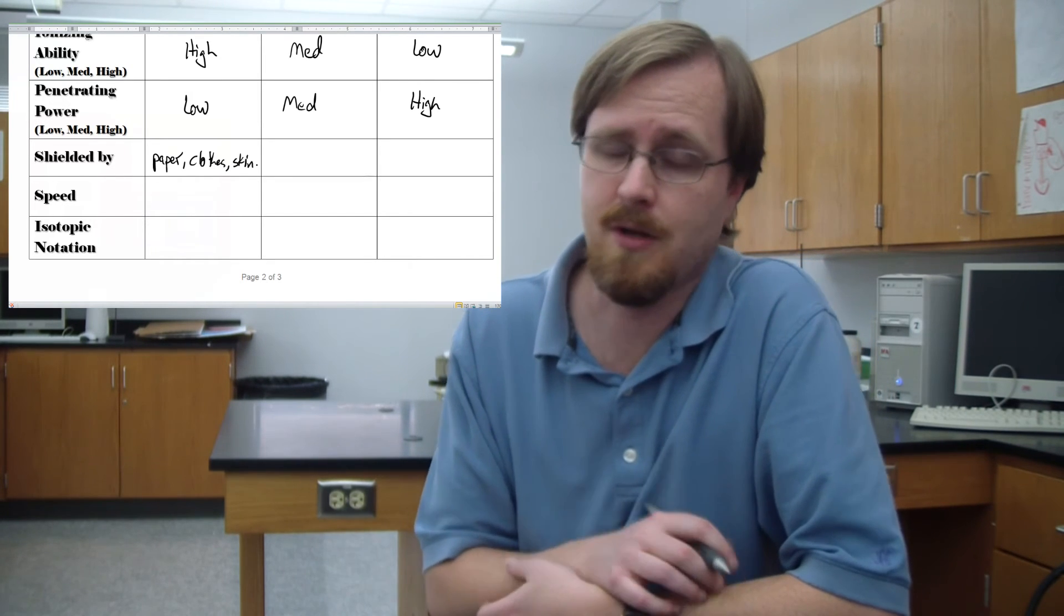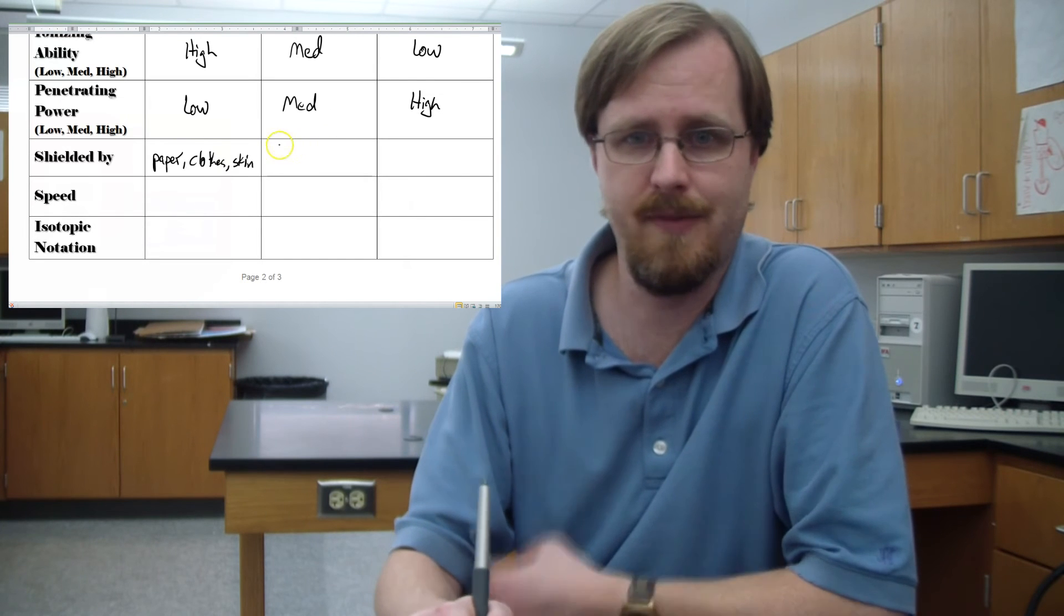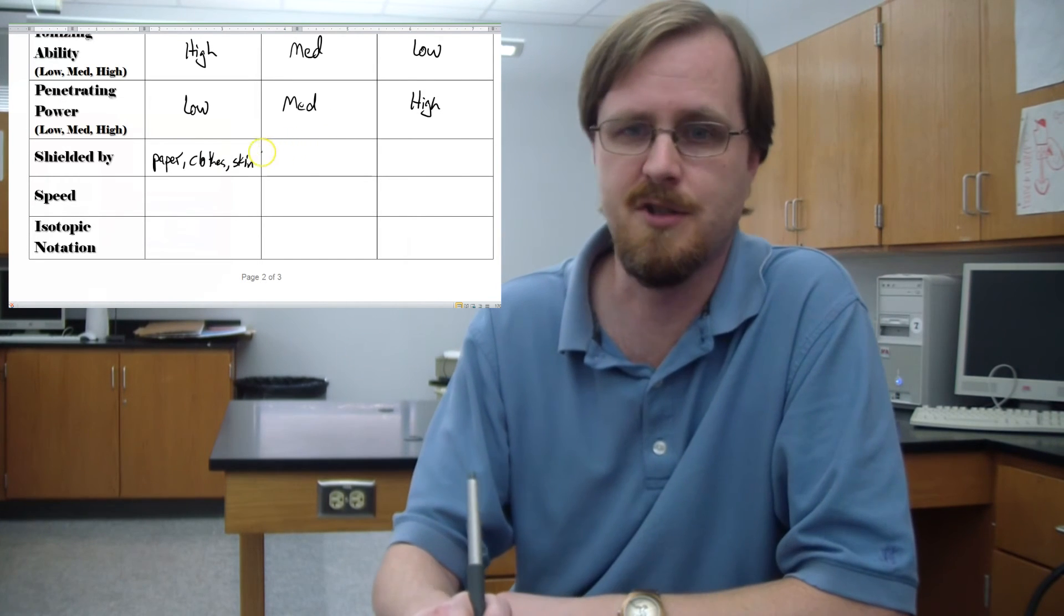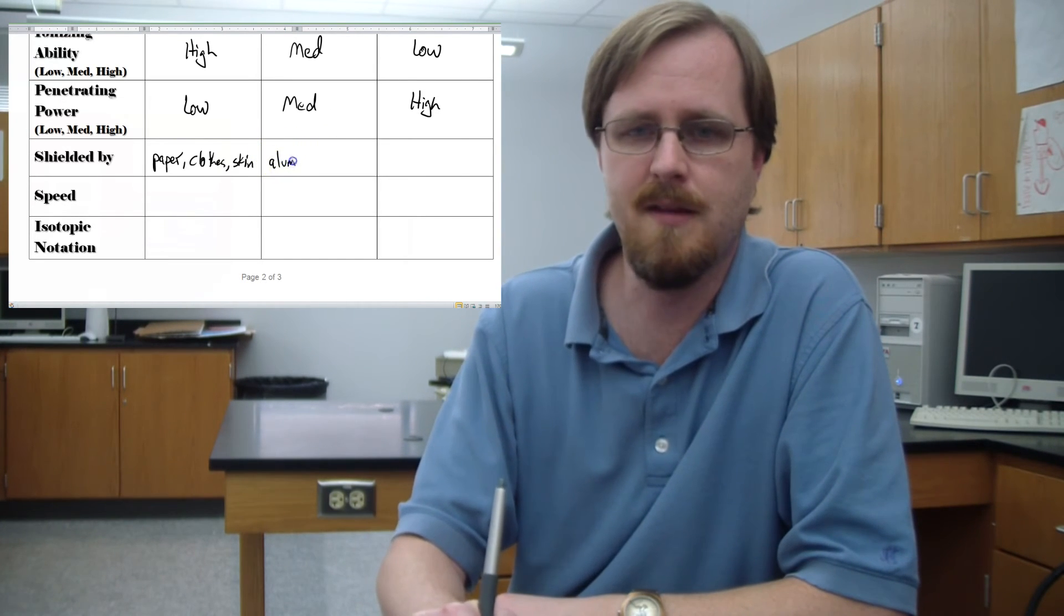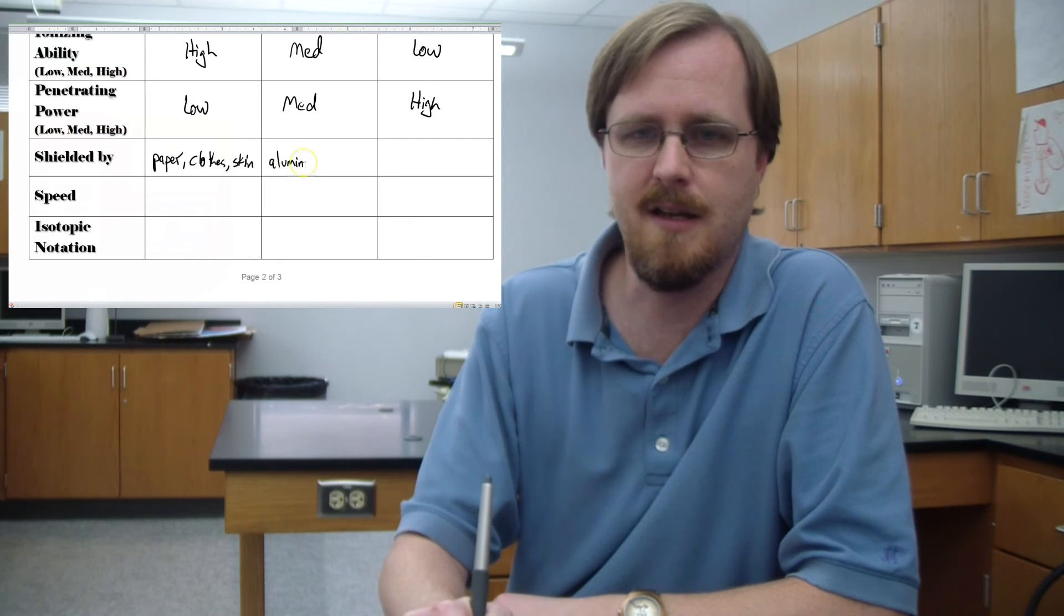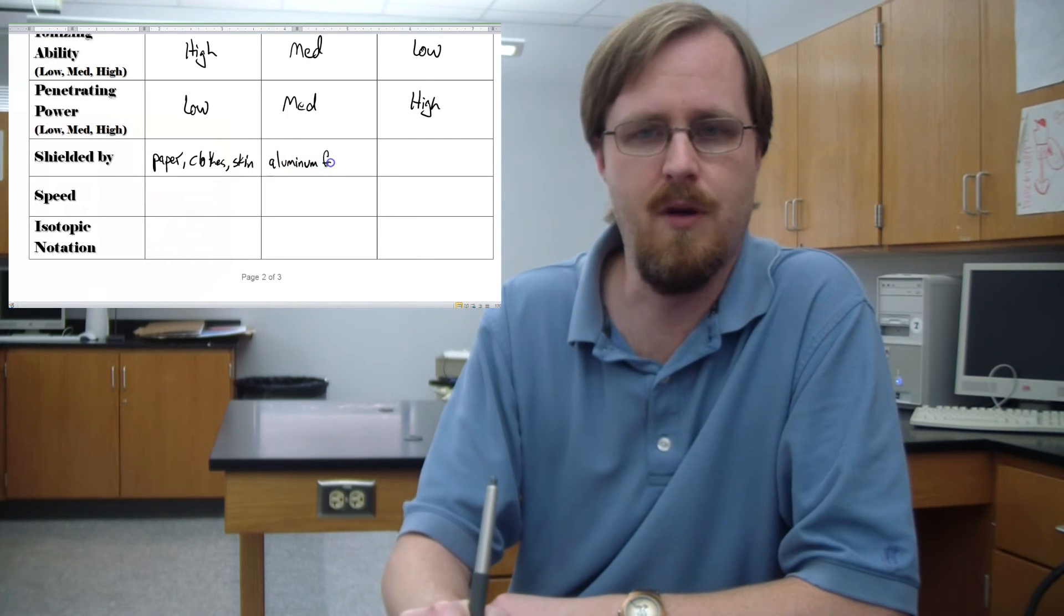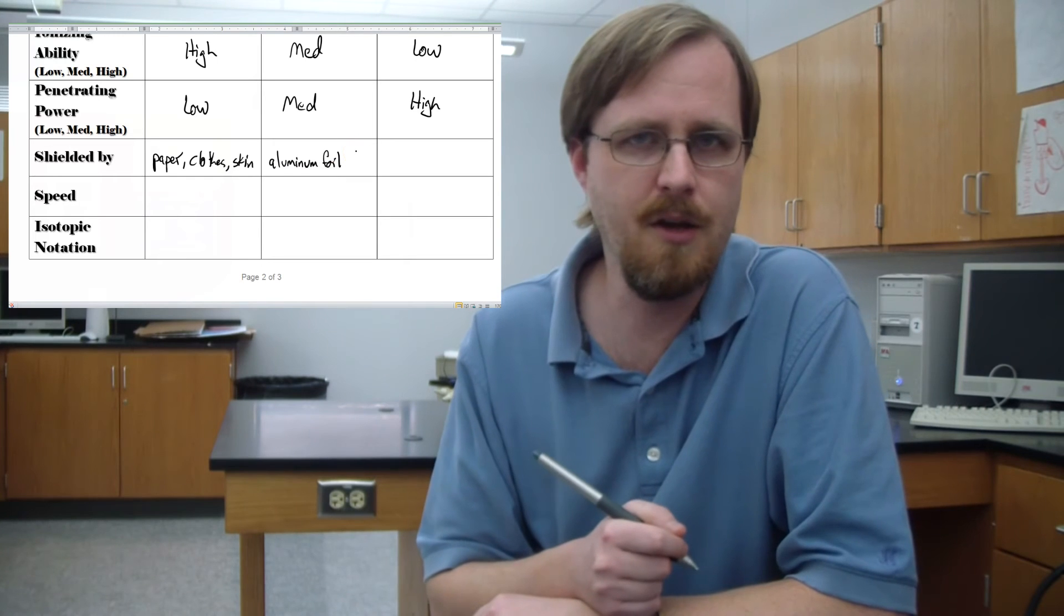Beta radiation, on the other hand, requires something with a little more thickness to it. So as long as we have something that's at least as thick as aluminum foil, then you'll be fine.